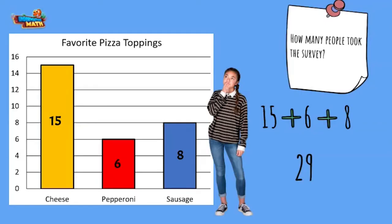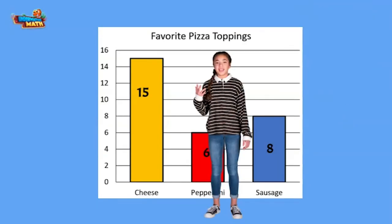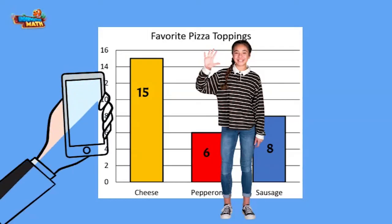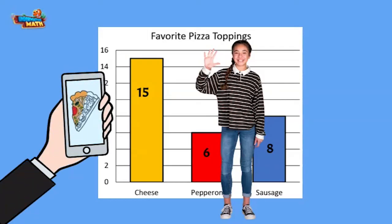29 people picked the pizza topping in the data shown. Two-step problems do not have to be hard — look for what the question is asking for, and then make sure to do all the steps. Now I need to look for the pizza place's number and get my order in!